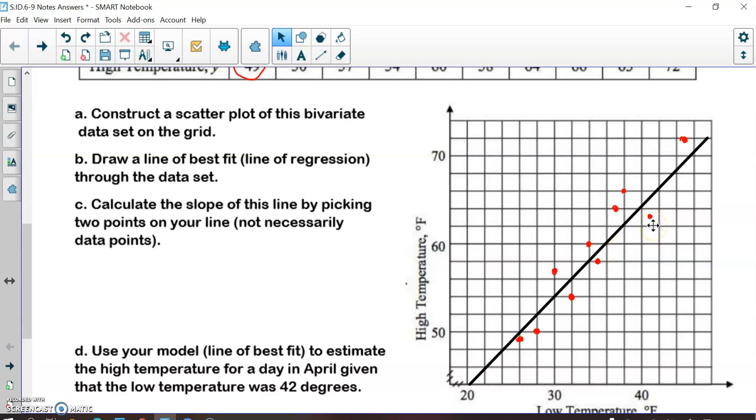So we have one, two, three, four, five data points below the line. And one, two, three, four, five data points above the line. So this would be a decent line of best fit here.